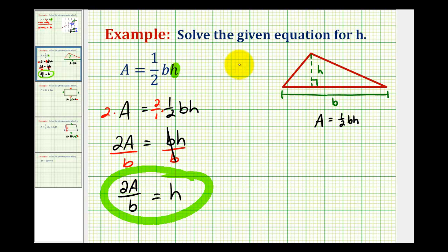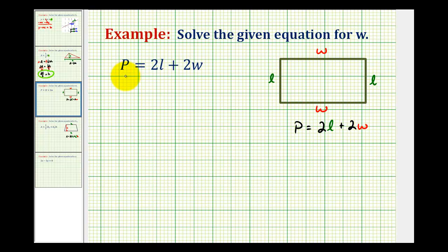Let's take a look at one more example for this video. Here we're given the equation P equals 2l plus 2w, and we want to solve the equation for w. This equation happens to be the perimeter formula for a rectangle.